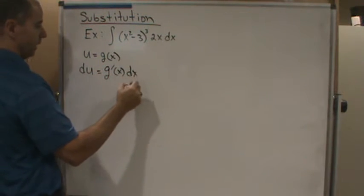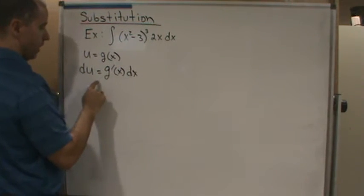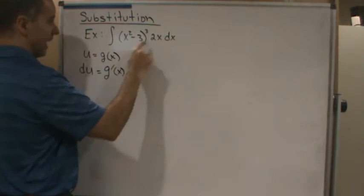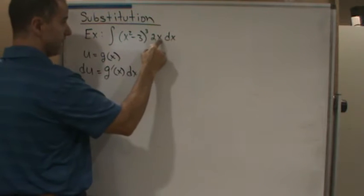So I've got to have something on the inside where the derivative is on the outside to do the u-substitution. And the derivative has to be in the numerator if it's a rational function.